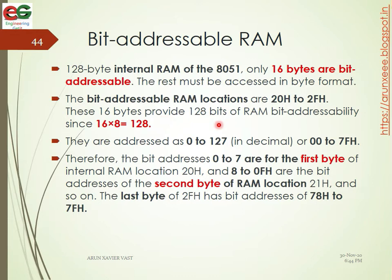These 16 bytes provide 128 bits of RAM that are bit addressable, since 16×8 equals 128. The address range is 0 to 127 in decimal. The bit address for the first byte goes from 0 to 7, covering the byte at location 20H.